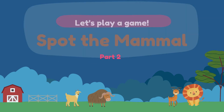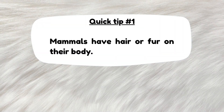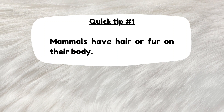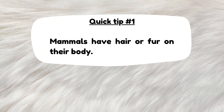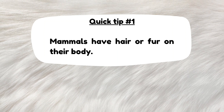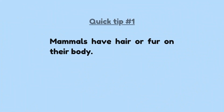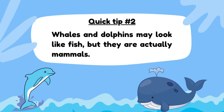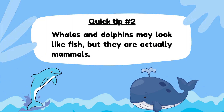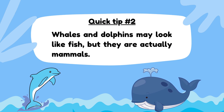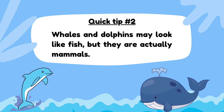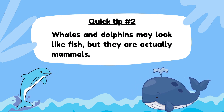Tip number one: all mammals have hair or fur on their body. This tip will help you a lot through this game, so don't forget it. Tip number two: whales and dolphins may look like fish, but they are actually mammals.